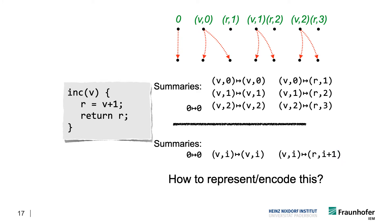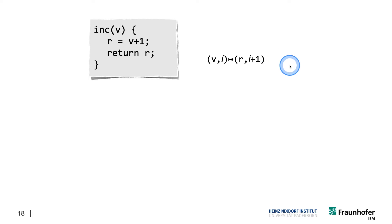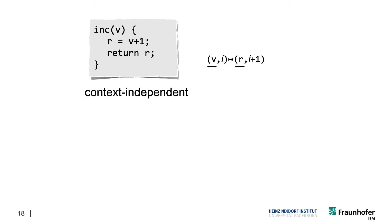So this is what we want. The question is rather how to actually represent and encode this and how to make a framework out of that. You can see that there are two things to these pairs, and this is important to understand because it really determines how you want to construct your particular instance of the IDE framework. Typically in IDE, you will always have these kinds of pairs — different components of your abstract domain.